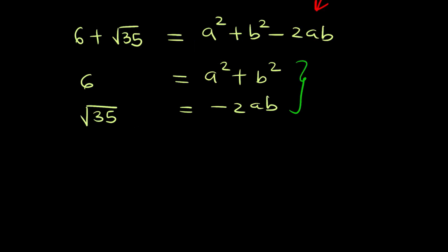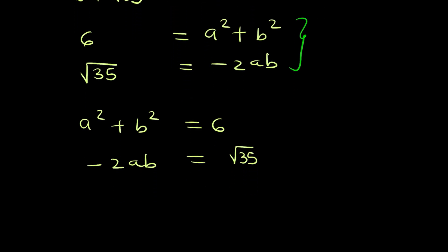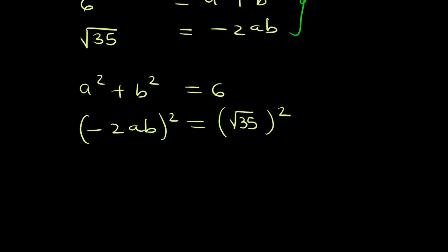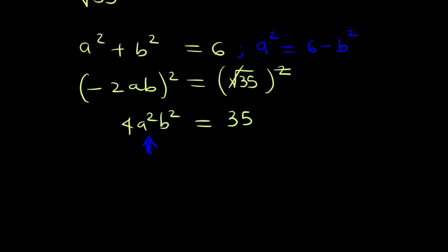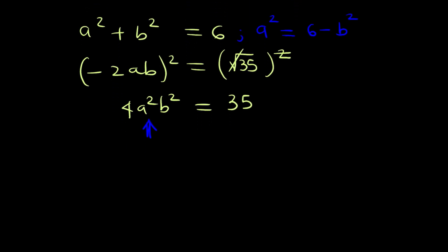Rewriting: a squared plus b squared is equal to 6, and negative 2ab is equal to root 35. Taking the square of both sides on the second equation gives us 4a squared b squared equals 35. From the first equation we can say a squared is equal to 6 minus b squared, so we substitute this into the second equation, giving us 4 times (6 minus b squared) times b squared equals 35.